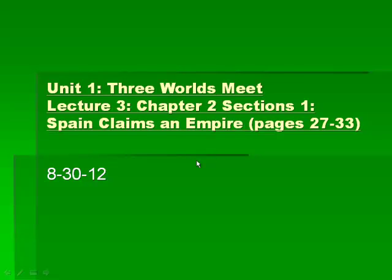Hello and welcome to Lecture 3 of Unit 1. Today we are going to be looking at how Spain comes over to the Americas and establishes its empire in the Americas. But first we need to figure out why Spain is even over here and how it gets over here, because at the beginning of this lecture, Spain has no knowledge that North America or South America exists. We are going to get to a place where it is known that these continents are there and Spain claims an empire.